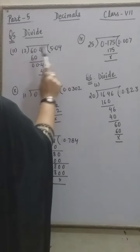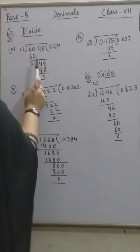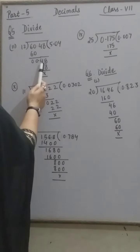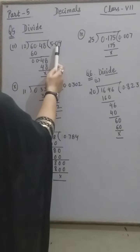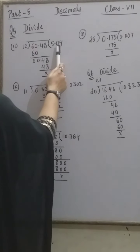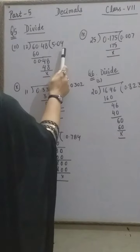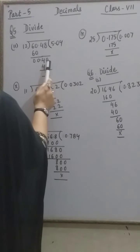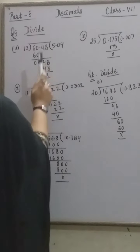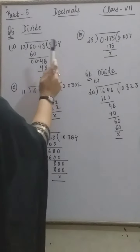We write the decimal point, then copy down 4. As 4 is less than 12, we do not read any table for 4, so we place 0 in the quotient. You have to be very careful for this step — if you do not write 0 here, your answer may be wrong. Now we read the table for 48: 12 fours are 48. So our answer is 5.04.